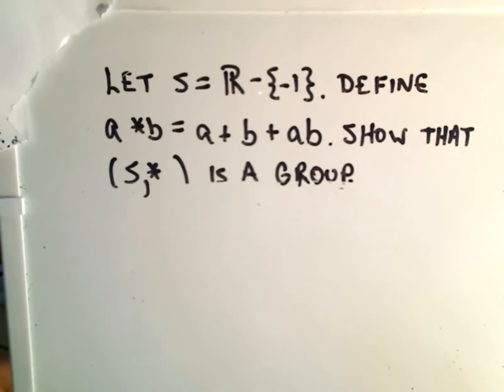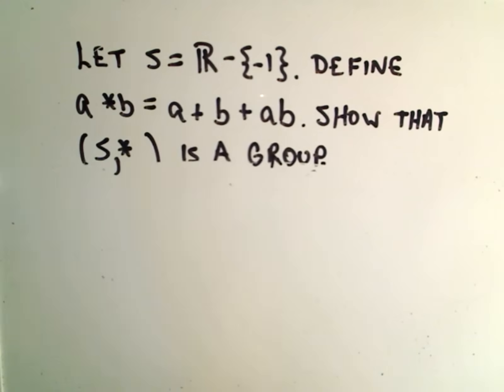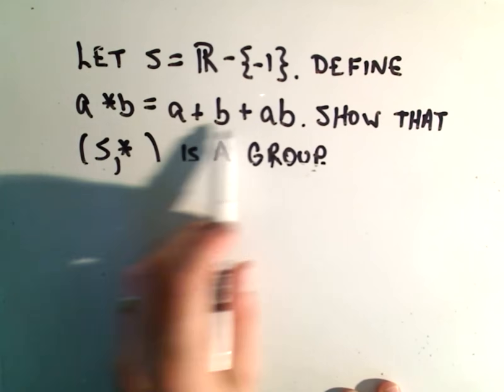So again, this was our group here. So the set of real numbers take away negative one, and this is the operation on our group.